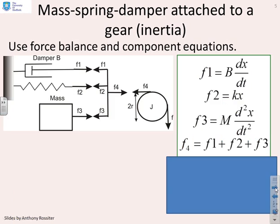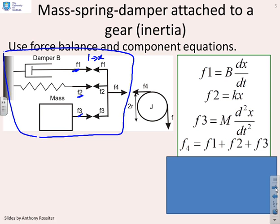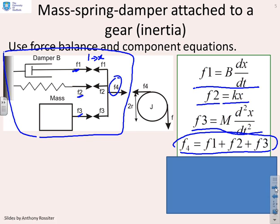Let's move on to the modeling. All we're going to do is exactly the same as we did with the mass spring damper system. I'm going to start by looking just at the mass spring damper. We mark in our displacement x. We look at all the component forces in each of the elements and write down the equations. The force in the damper f1 equals B dx/dt. The force in the spring f2 equals kx. The force accelerating the mass f3 equals M d²x/dt². The overall force balance equation f4 equals f1 plus f2 plus f3.